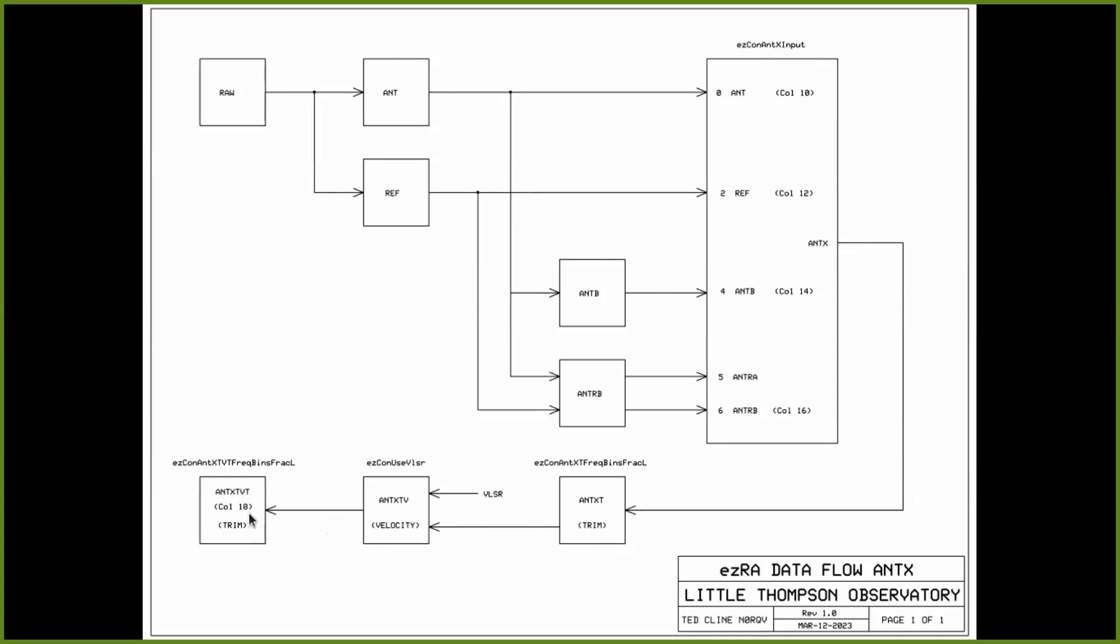And then after that, you could trim it again, meaning take off the high frequencies and the low frequencies. As determined by this long keyword, EZ-CON-ANTX-TVT, frequency bins, fraction. And it's a list because it's a set of two numbers. And that adds another T for trim on the end.